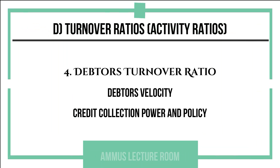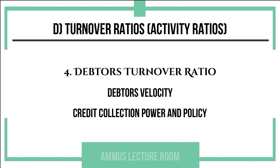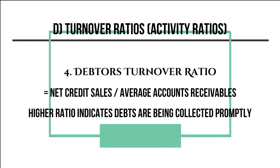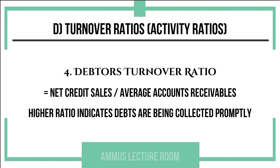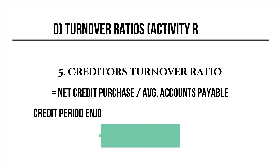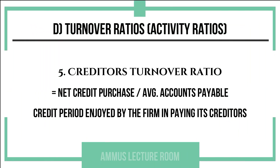The debtors turnover ratio, also called debtors velocity, helps discuss a firm's credit collection policies. Its equation is: net credit sales divided by average accounts receivable. A higher debtors turnover ratio indicates that debts are being collected promptly. The creditors turnover ratio equation is: net credit purchases divided by average accounts payable, and it indicates the credit period enjoyed by the firm.